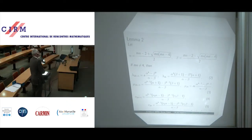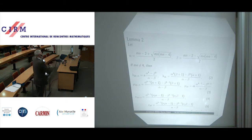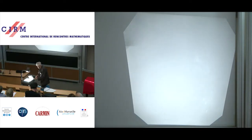And Lemma 2: let alpha and beta be conjugate quadratic integers as shown on the screen. If the product MN is different from 4 — and if it equals 4 they are not conjugate irrational numbers but identical rational numbers — then we have the following explicit formulae for lambda, mu, and nu, which are rather complicated and I will not read them aloud.